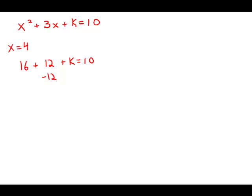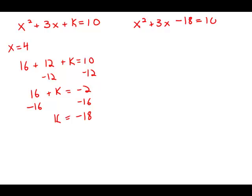Subtract 12 from both sides, we get 16 plus k equals negative 2. Subtract 16 from both sides, we get k equals negative 18. I'm going to plug that back into the original quadratic.